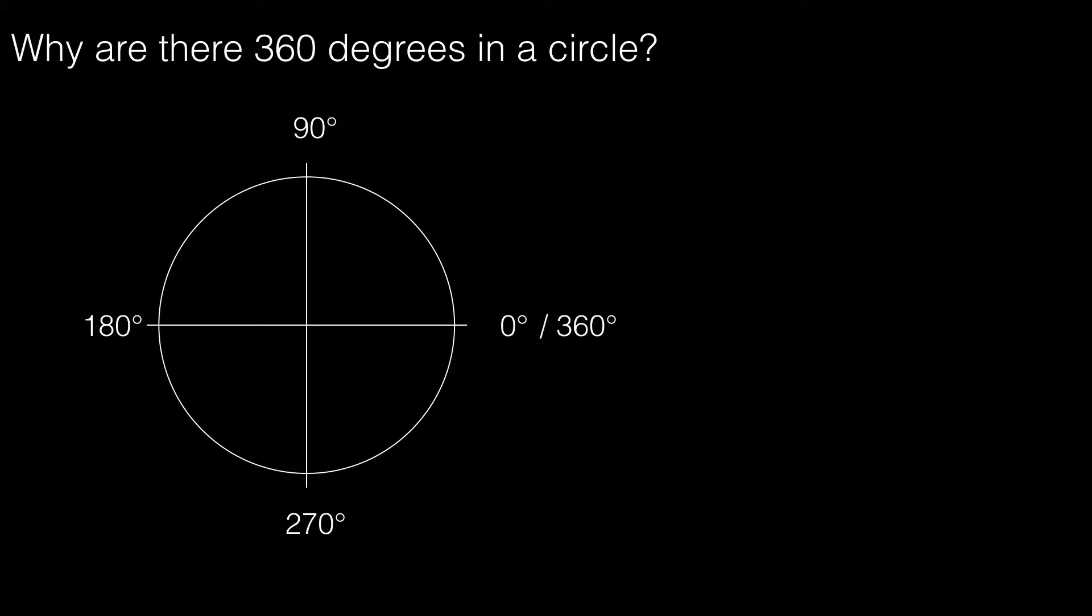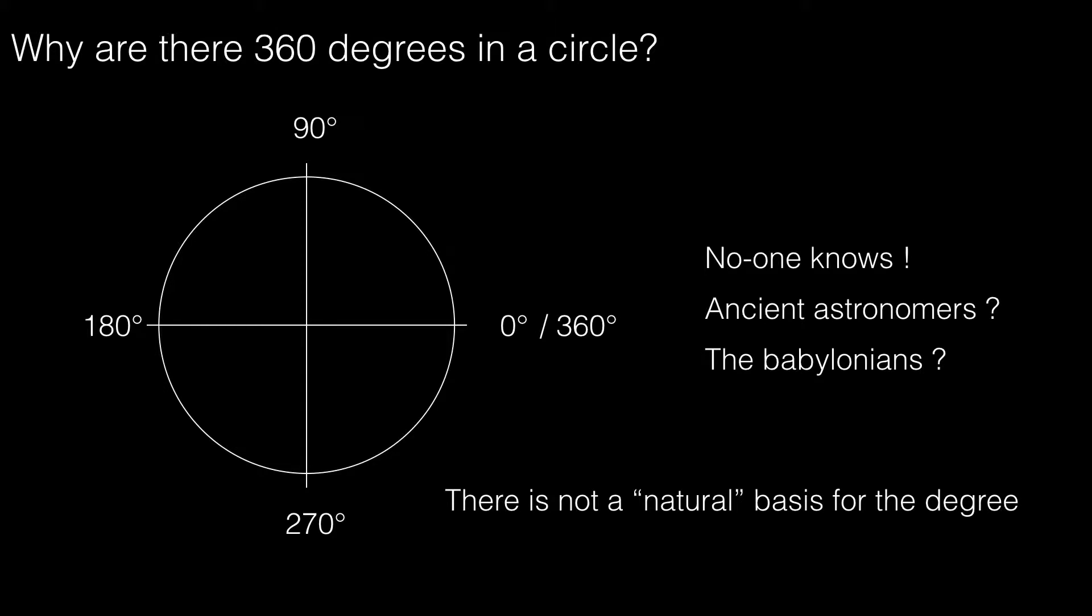Why are there 360 degrees in a circle? Well, the answer is no one knows. Perhaps it was ancient astronomers—theories suggest it's related to 365 days a year being close to 360. Others say it was the Babylonians or independently arrived at by Indian scientists. Basically, there is not a natural basis for the degree as a measure of angular displacement.